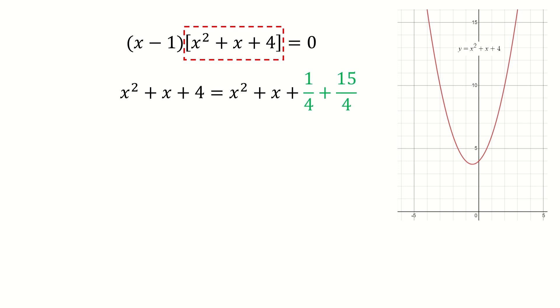So we rewrite 4 as 1 over 4 plus 15 over 4. Then we complete the square for the right hand side. And we know for the complete square, the right hand side is always non-negative. So the right hand side is always positive. Then x square plus x plus 4 is always positive for all real x.